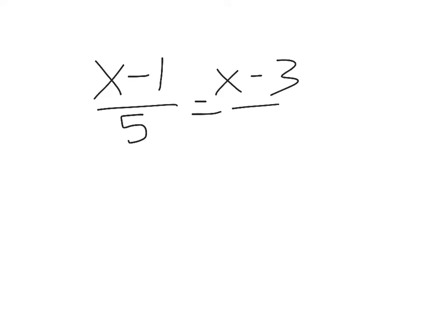Okay, let's take a look at a second example using the cross products method. So once again, I'm just going to do 5 times x minus 3. If I multiplied both sides by 5, those are the two things that would be multiplied.